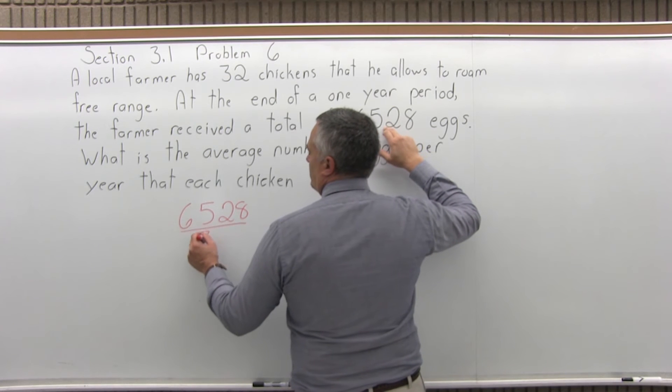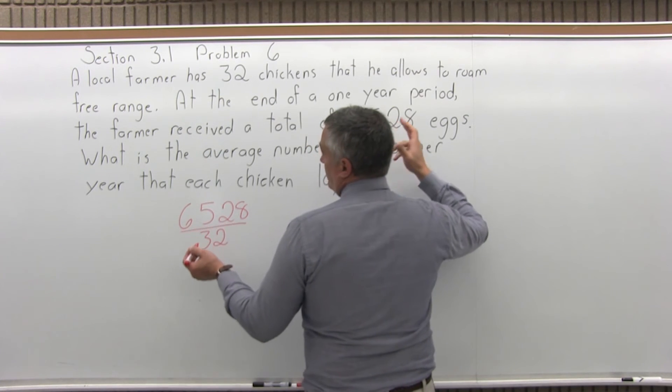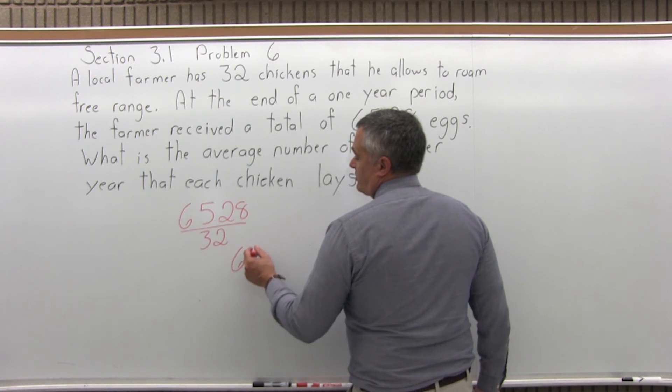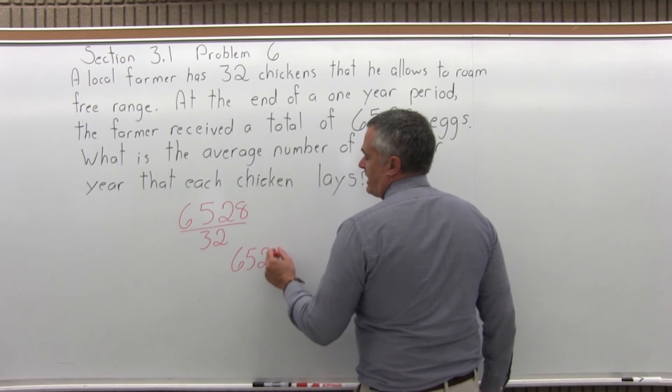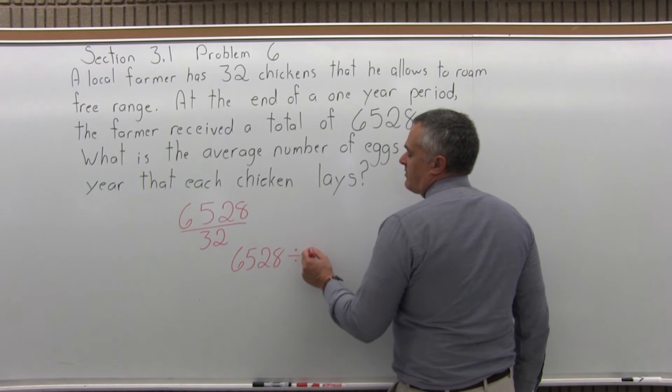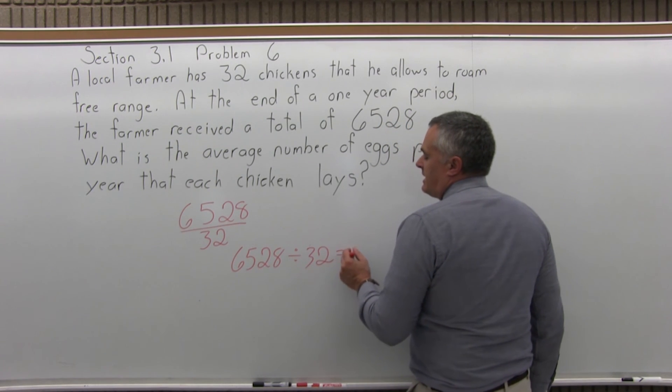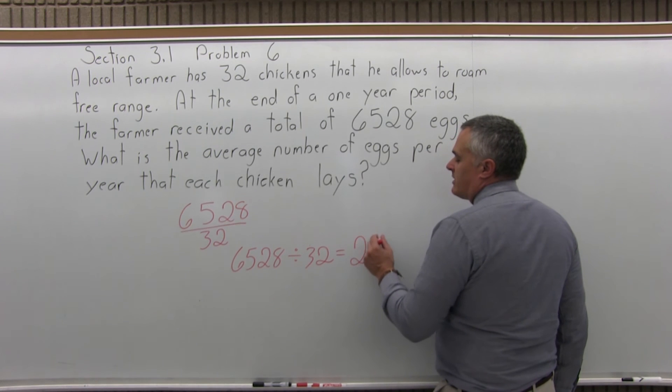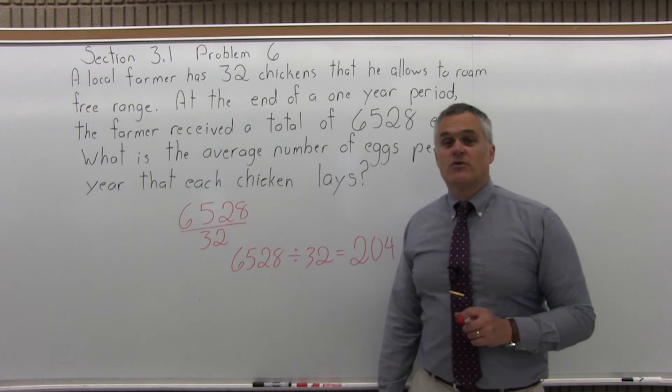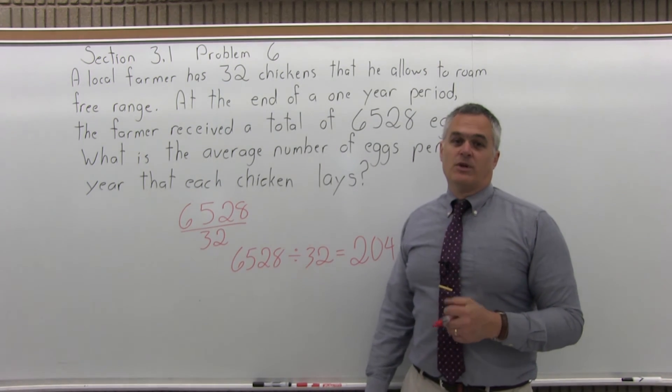And you would divide that by 32 because that's the number of chickens. So that's not something that you would be able to reduce without a calculator. So with your calculator, enter 6,528 first, divide by 32 equals. And the calculator will tell you right away 204. And that's the answer. It's an average of 204 eggs per chicken for a one-year period.